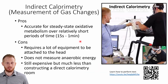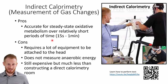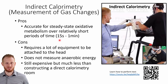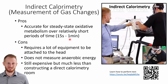The main pro of indirect calorimetry is that it's accurate for steady-state oxidative (aerobic) metabolism over short periods of time. Unlike direct calorimetry where the person needs to be in the room for multiple hours, here you can hook up the machine and once they reach steady state, take measurements breath by breath, averaging them from 15 seconds up to about one minute for a stable, accurate value.